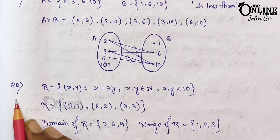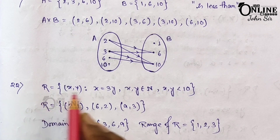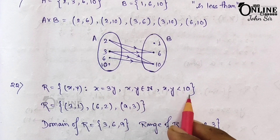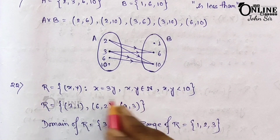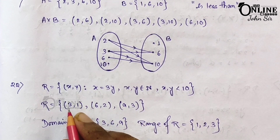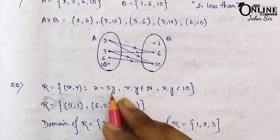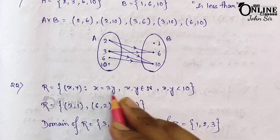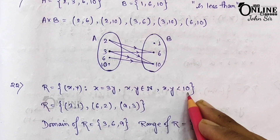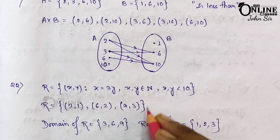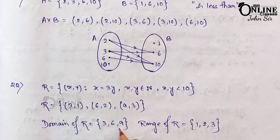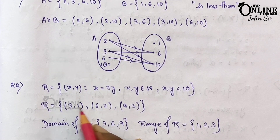Now sum number 22. Write down the domain and range of the relation {(x,y)} such that x = 3y, where x,y belongs to natural numbers less than 10. If y = 1, x = 3; if y = 2, x = 6; if y = 3, x = 9; if y = 4, x = 12, but 12 is not less than 10. So the ordered pairs are (3,1), (6,2), (9,3). Domain = {3,6,9}, range = {1,2,3}.